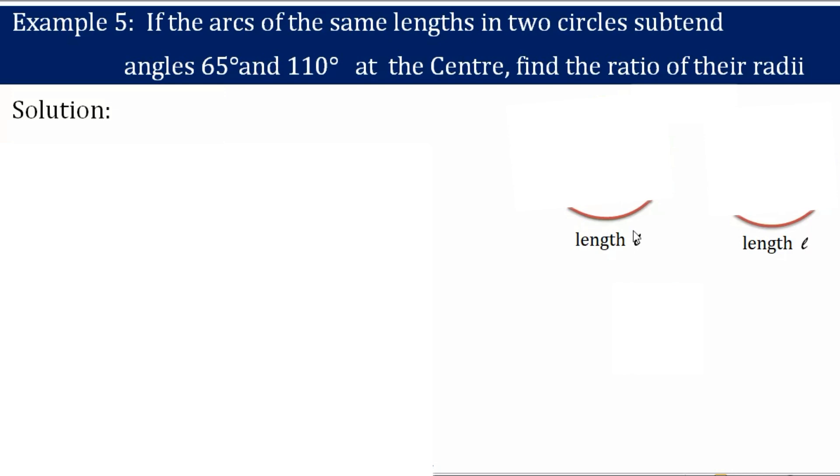We have two arcs of the same length and let the length be L. This arc is of this circle and this arc is of this circle. Next, in two circles, they subtend angles of 65 degrees and 110 degrees. So in the first circle,